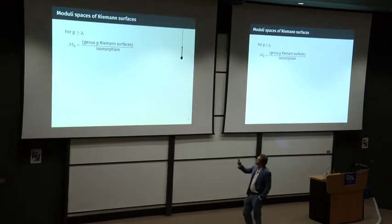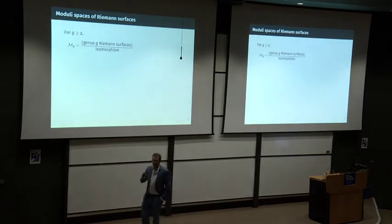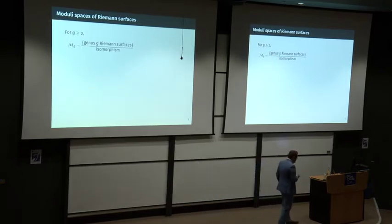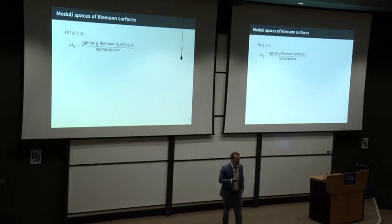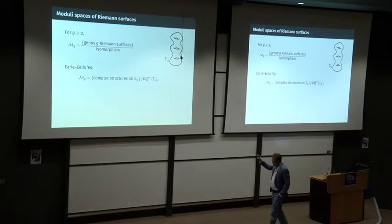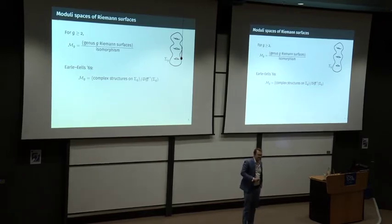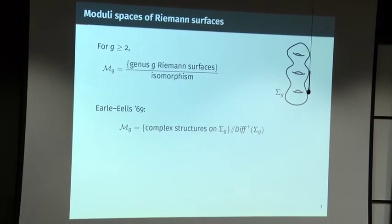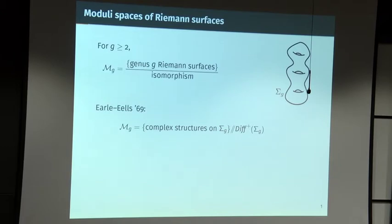We fix a genus of surface — at least two — and we look at the set of all genus-g Riemann surfaces up to isomorphism. To begin with, that's just a set. We would like to make this into some sort of space, and I want to explain a differential geometric point of view on how to do that, due to Eells. You pick a platonic genus-g surface as reference and look at the space of complex structures on that given smooth surface.